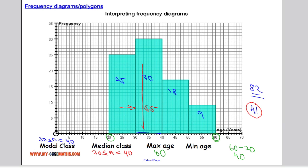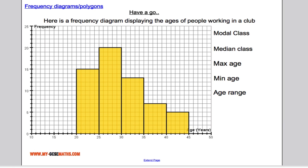A few questions for you to try. Pause the video. See if you can work out what the modal class, median class, max age, mean age, and the age range is. Hopefully you've had a go at that. And here are your solutions so you can mark your work.